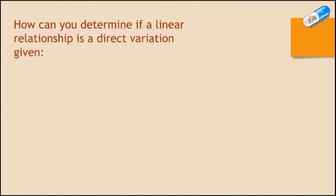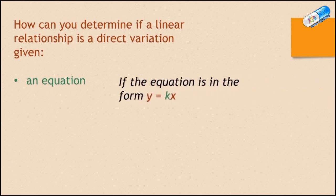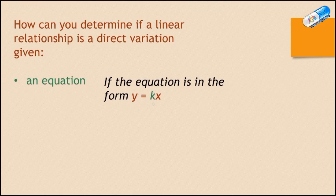Now, how can we determine if a linear relationship is a direct variation given an equation? If you are given an equation, how can you determine if a linear relationship is direct variation or not? If the equation is in the form y equals kx, then directly this is a direct variation. If you are not given an equation, if you are given a graph, how can you determine if a linear relationship is direct or not?